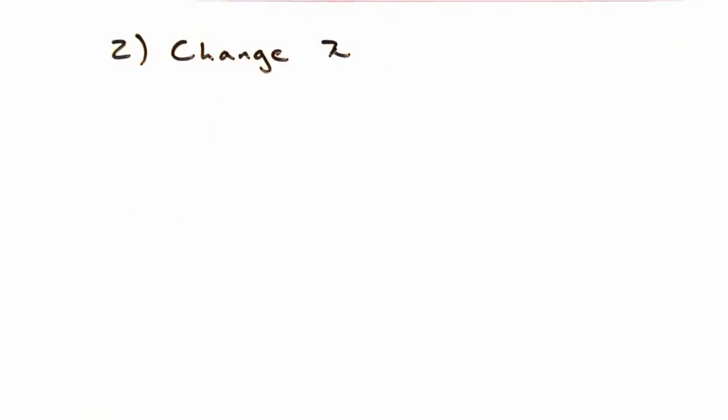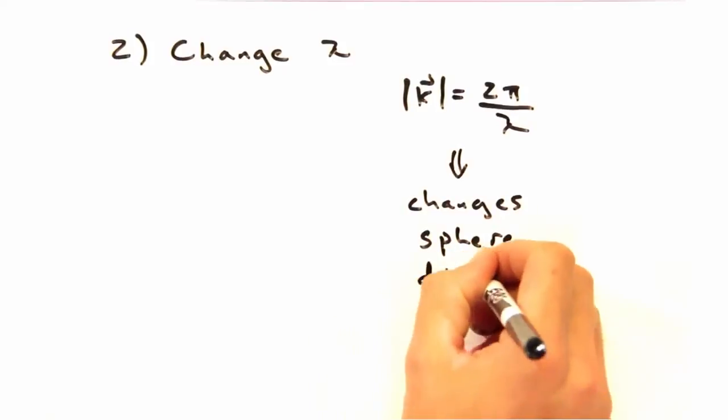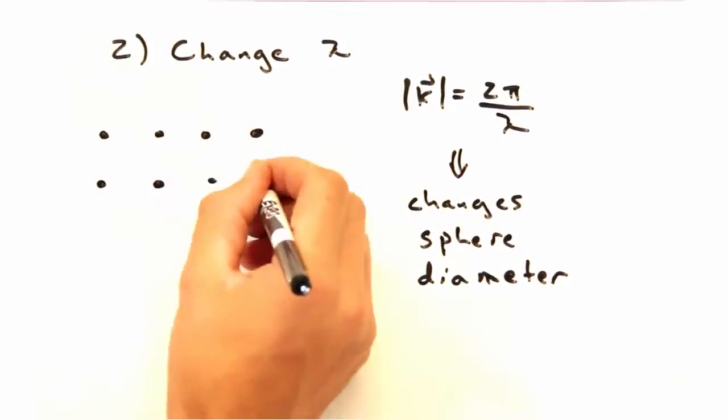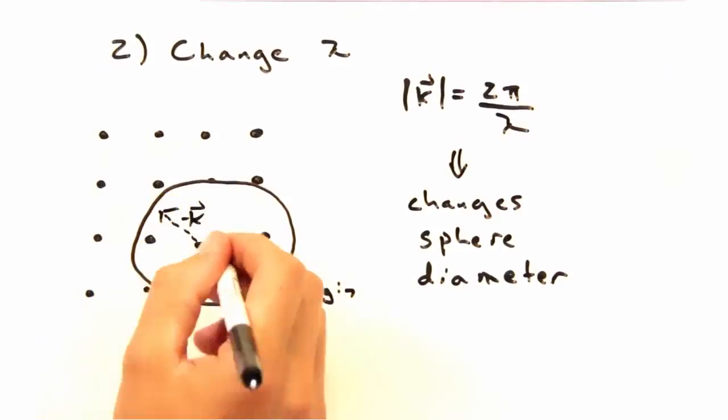Could we also change the wavelength? Since the magnitude of k and k prime is 2 pi over lambda, a smaller wavelength should make the sphere bigger. And a bigger sphere is more likely to intersect more points for a given change.